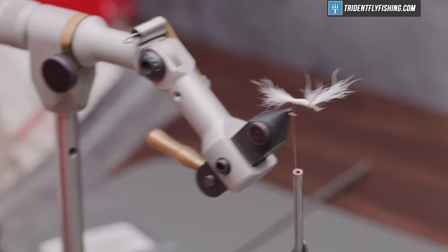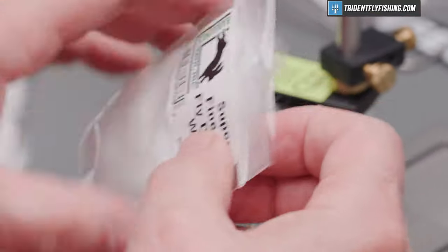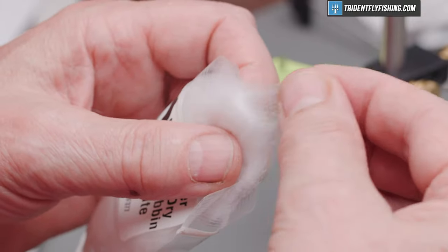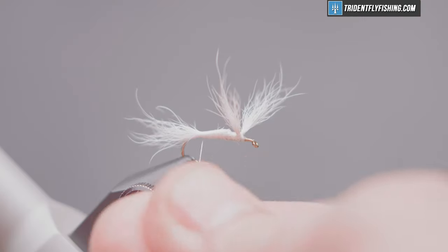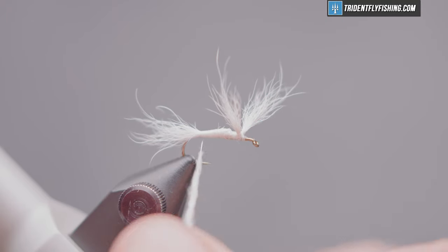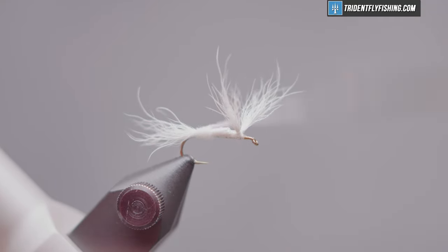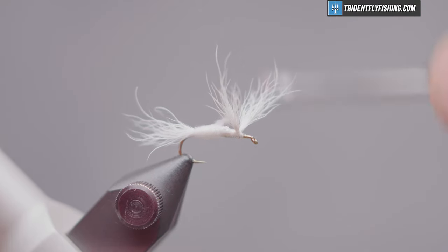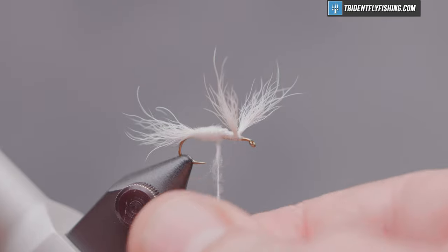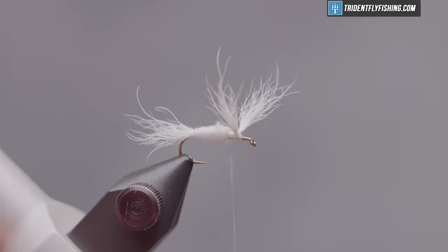And the body of the fly. It's going to be some super fine dry dubbing from hairline. And the color is white. You want nice clean hands for this or your dubbing is not going to be white. We'll form a dubbing noodle. And wrap forward to the base of the wing. Tapered body. Just a little bit more. There we go.